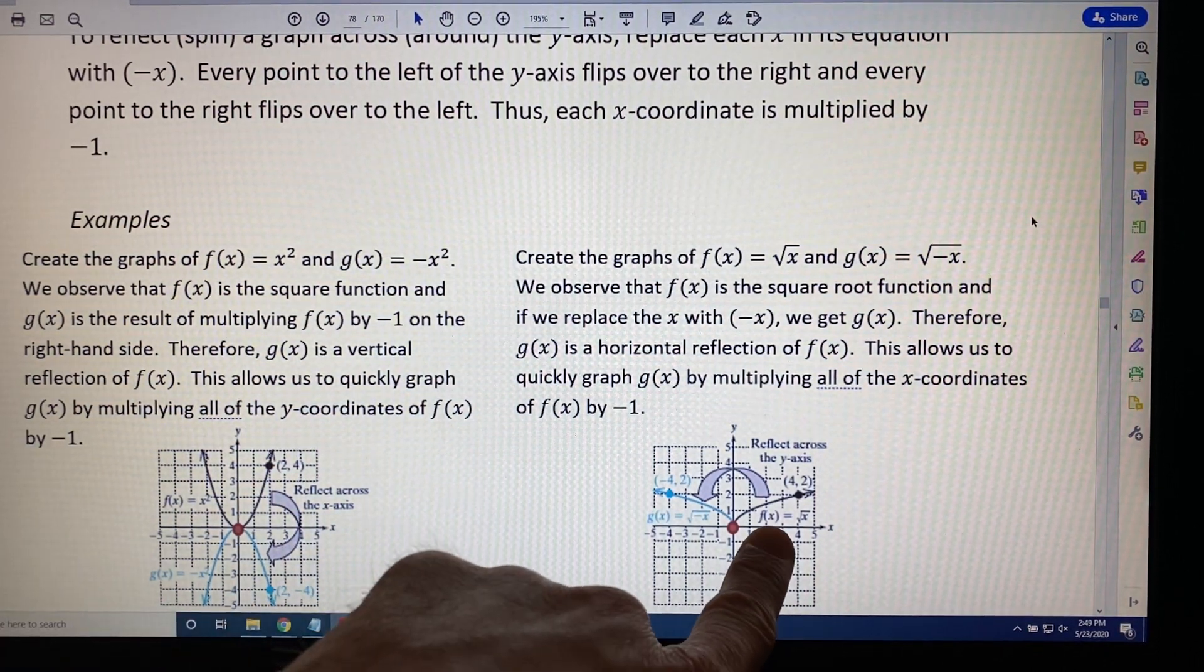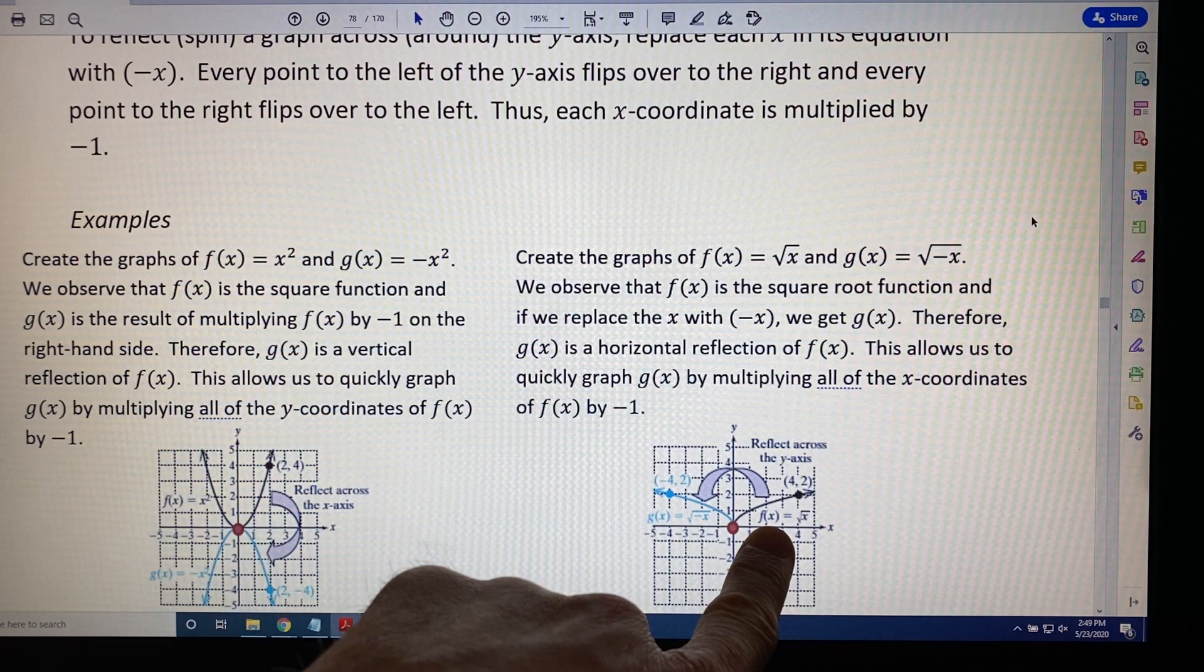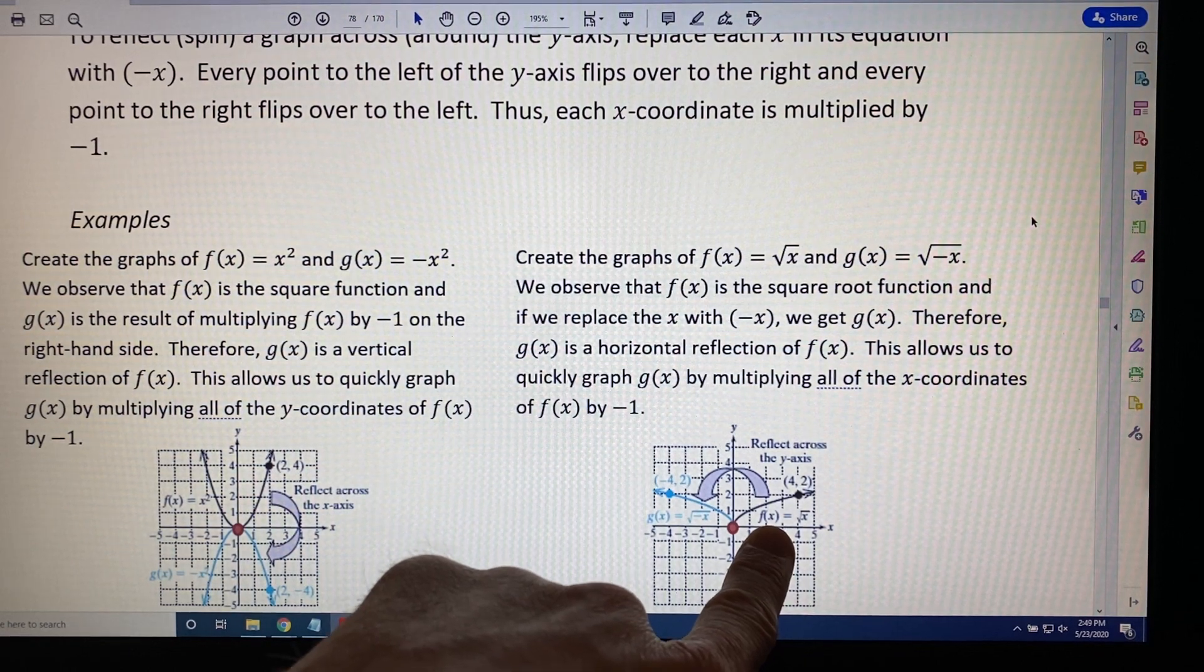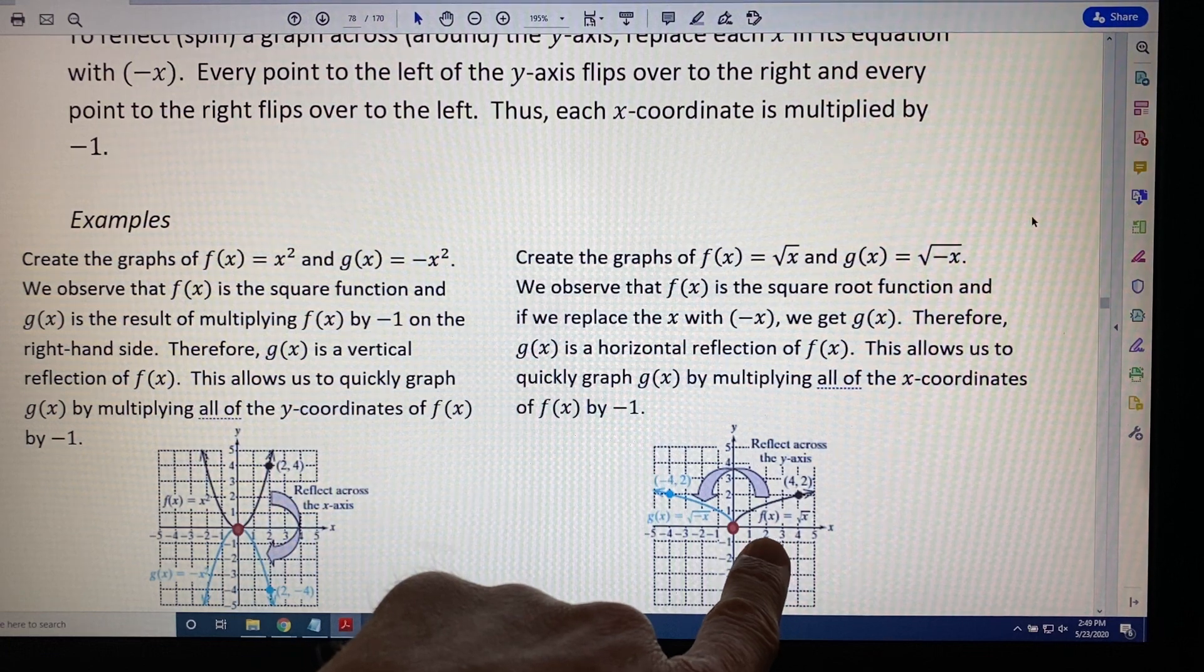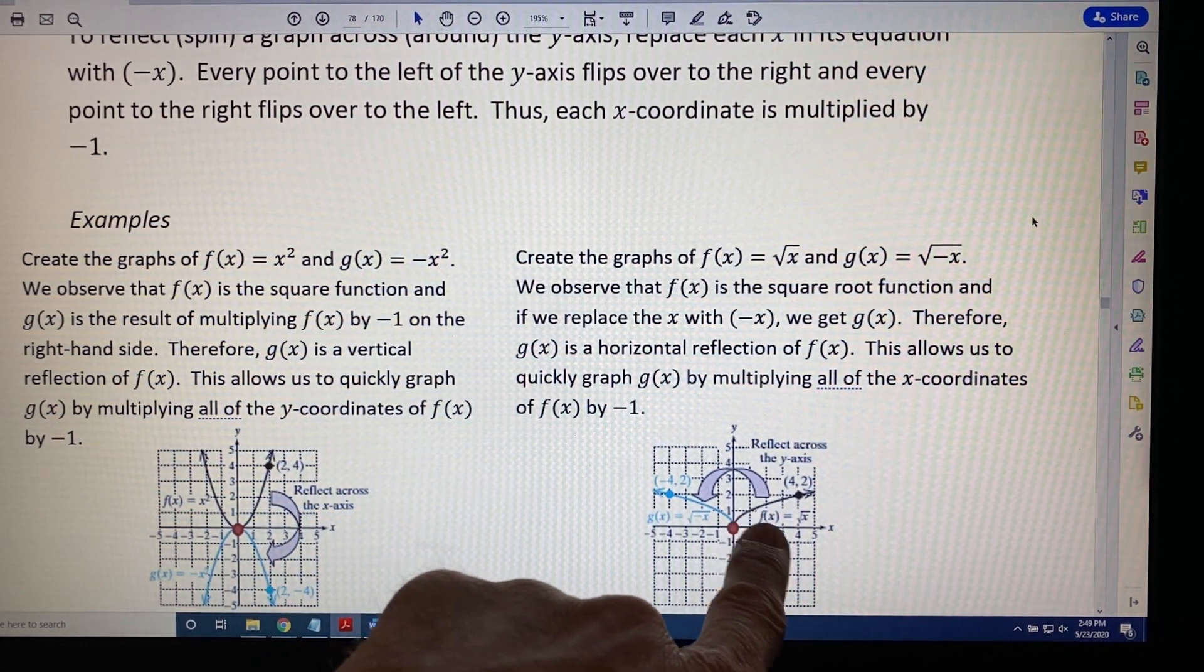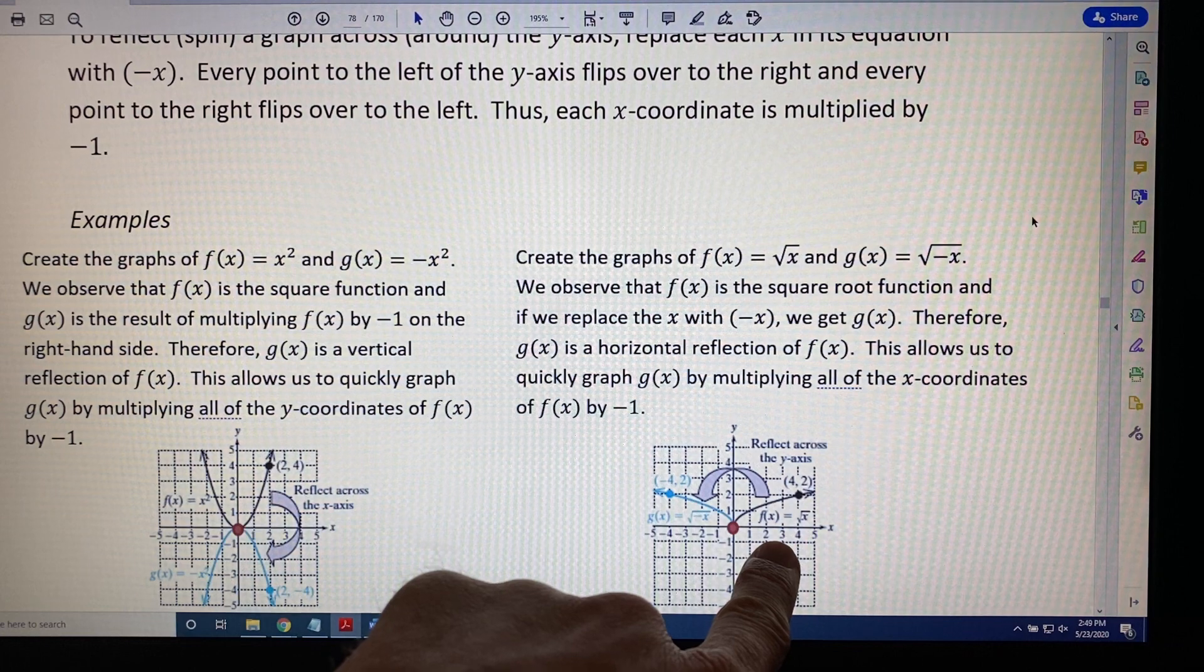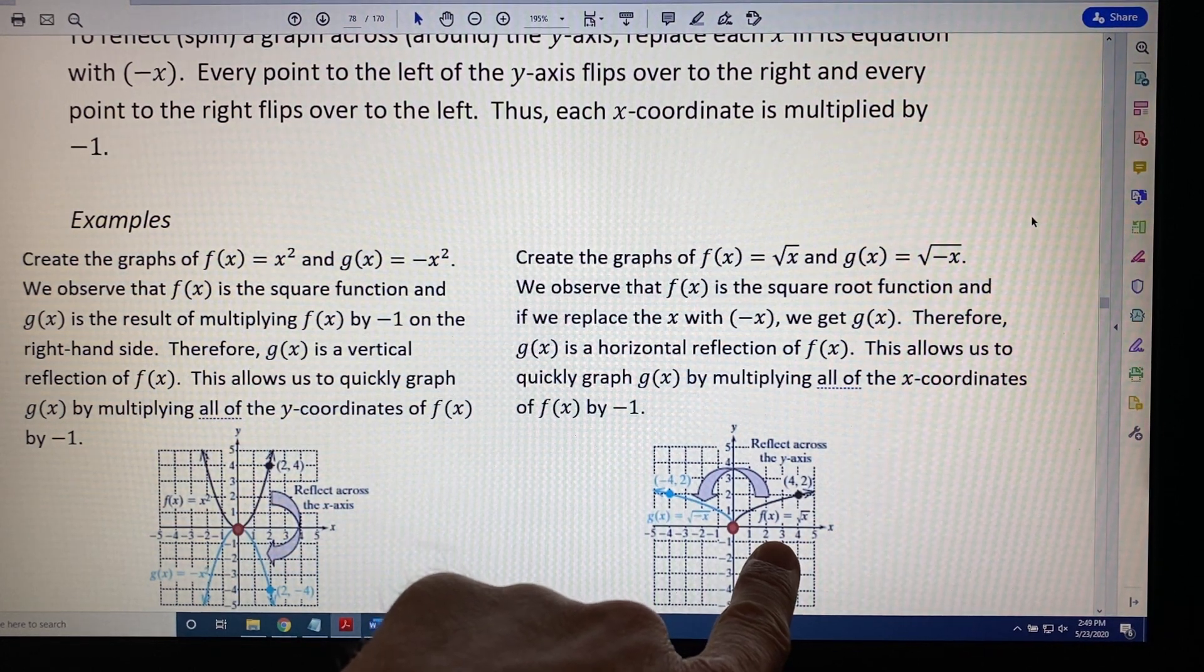So the black curve is the parent function, the basic function, the square root function, the one we're starting with, and it has the familiar points (0, 0), (1, 1), (4, 2), which we all should know from memory by now.